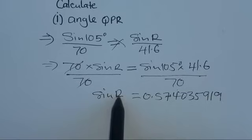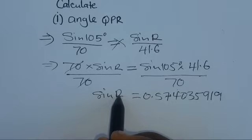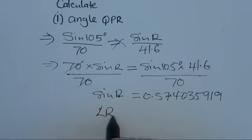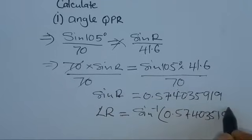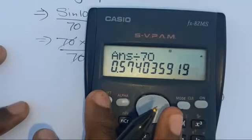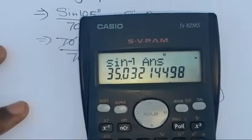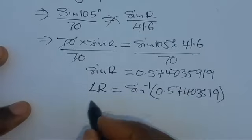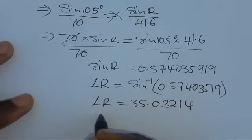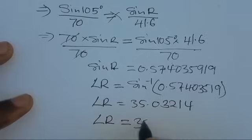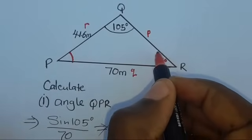To find angle R, we apply sine inverse to both sides. So angle R = sine⁻¹(0.574035919). On the calculator: shift, then sine of the answer, which gives 35.032°. So angle R is equal to 35 degrees.